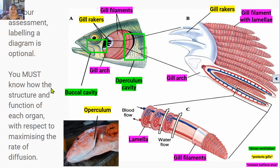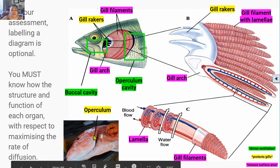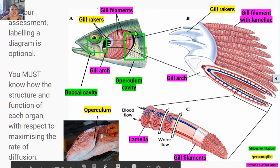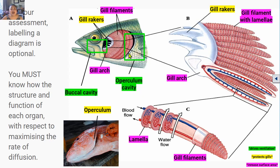The snapper gill system consists of the mouth, which leads to the buccal cavity — the space inside the mouth — which is important for ventilation. To either side of the fish's head are bony flaps called the operculum, with one operculum on the left side and one on the right side of the fish's head. The two operculum cover the two sets of gills, protecting them. Just behind the operculum is a space called the operculum cavity, and there are two operculum cavities because there are two operculums. These operculum cavities are important for ventilation too.